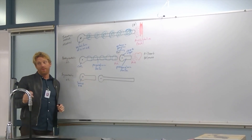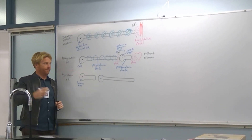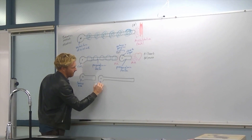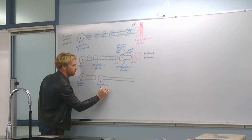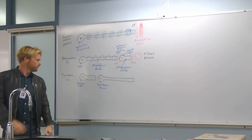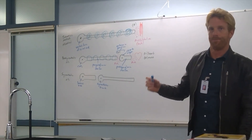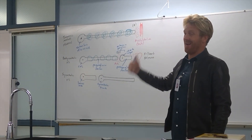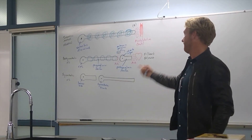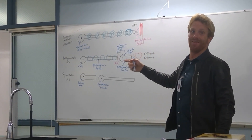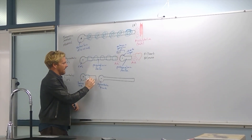The postganglionic cell bodies of the sympathetic nervous system are often located in the sympathetic trunk — like the trunk of an elephant. All preganglionic neurons are lightly myelinated, just like the parasympathetic. By definition, preganglionic neurons are always lightly myelinated.